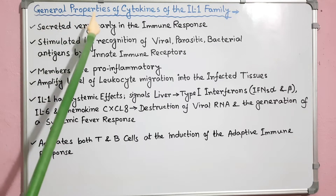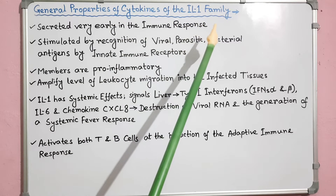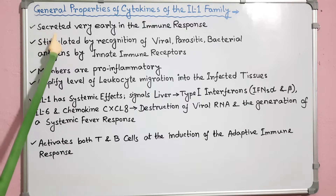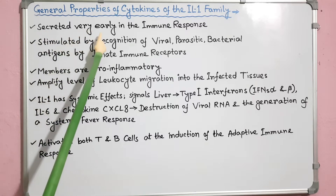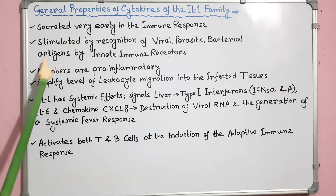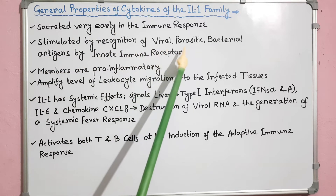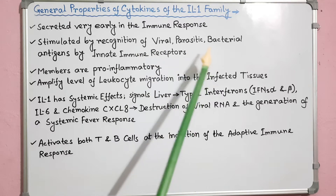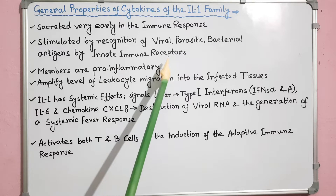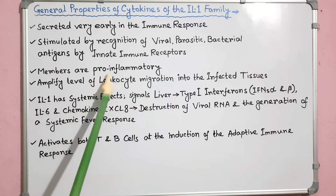General properties of cytokines of the interleukin-1 family: cytokines of the interleukin-1 family are typically secreted very early in the immune response. IL-1 secretion is stimulated by recognition of viral, parasitic or bacterial antigens by innate immune receptors. IL-1 family members are generally pro-inflammatory.